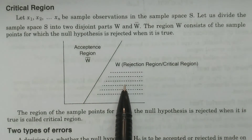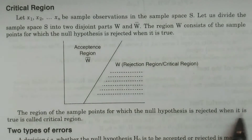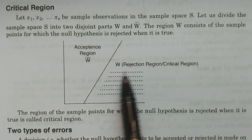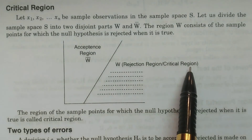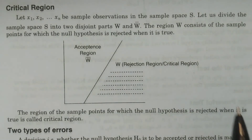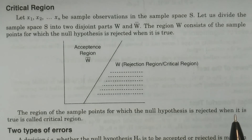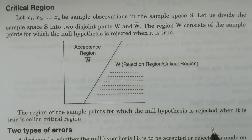This region — simply put — is the region of sample points for which the null hypothesis is rejected when it is true. It is called the critical region. W is called the critical region; W complement is the acceptance region. The rejection region is known as the critical region — the region of sample points for which the null hypothesis is rejected when H0 is true.